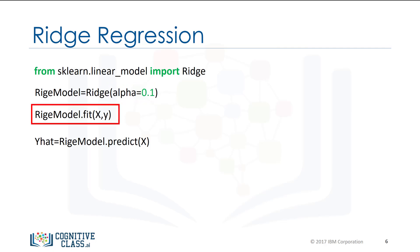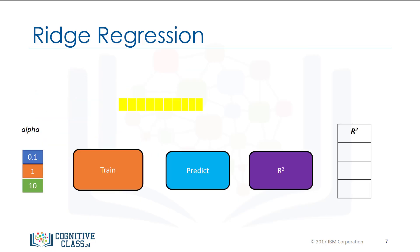We train the model using the fit method. To make a prediction, we use the predict method. In order to determine the parameter alpha, we use some data for training. We use a second set called validation data. This is similar to test data, but it is used to select parameters like alpha.